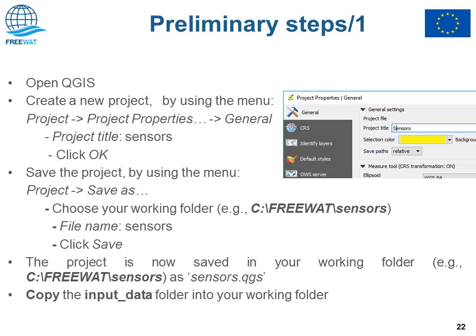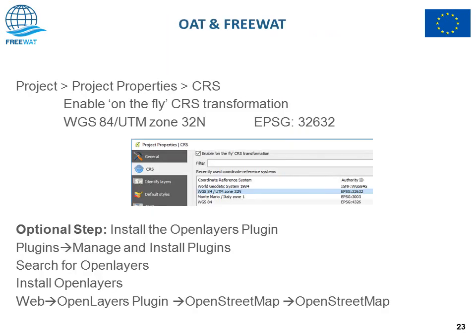Now you have your saved sensor.qgs project in, for example, a FreeWAT sensor folder. You can then copy the input data folder to the working directory. The second preliminary step is to set up and enable on-the-fly projection of the coordinate reference system so that uploaded layers can be reprojected on-the-fly.